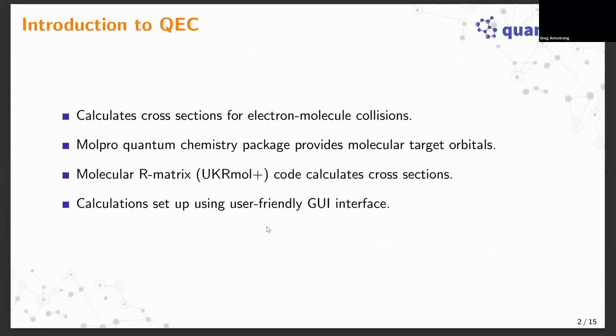As a brief introduction to QEC, QEC is software which calculates cross sections for electron molecule collisions, electron impact processes. It interfaces with two main codes: firstly the MOLPRO quantum chemistry package which provides molecular target orbitals for the description of the target molecule, and also the molecular R-matrix code UK ARMOR.